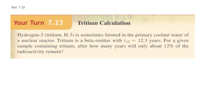So let's practice that to predict how much radioactivity would remain or how much time. In this case, tritium is sometimes formed in the primary coolant water of a nuclear reactor. It's a beta-emitter with a half-life of 12.3 years. So for a given sample containing tritium, after how many years will only about 12% of the radioactivity remain?